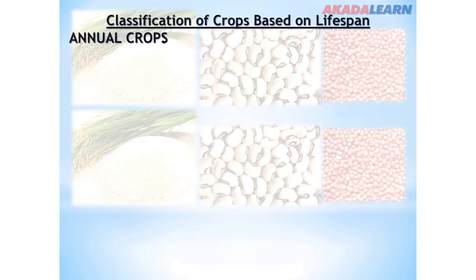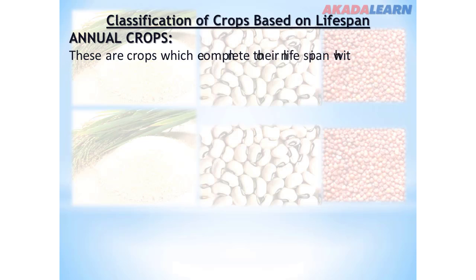Classification of crops based on lifespan. Number one, we have the annual crops. Annual crops are crops which complete their lifespan within one year or one growing season.